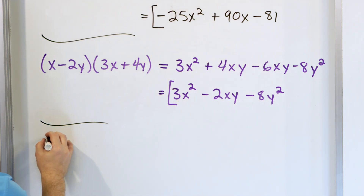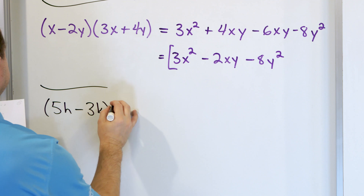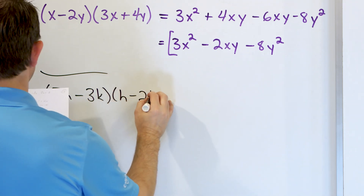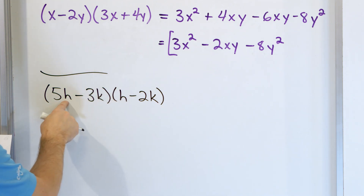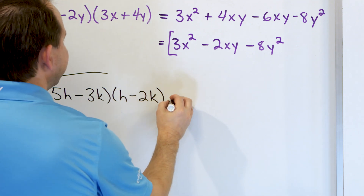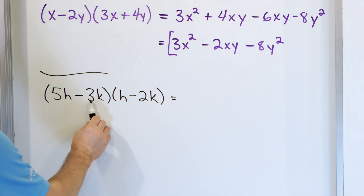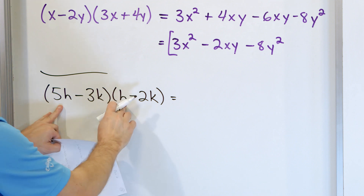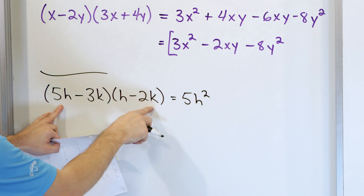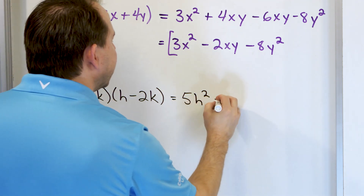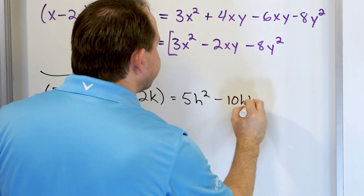What if we have (5h - 3k)(h - 2k)? It looks weird because we have two variables h and k, but it's the same thing — first, outer, inner, last, or distribute each term. So 5h times h gives 5h squared. Then 5h into the last term: negative 2 times 5 gives negative 10, and I have k and h, so I write negative 10hk.